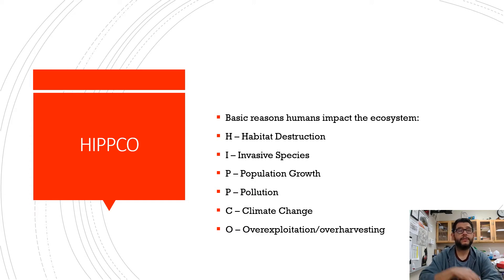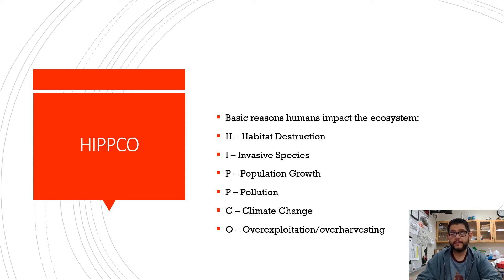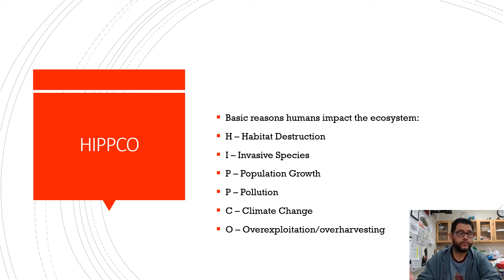Habitat destruction is clearly the removal of habitats such as trees or water. Invasive species is where you introduce something that's not supposed to be around and it ends up out-competing your native species. Population growth is where human population tends to be the overall problem — our population growth causes us to destroy more habitat or introduce invasives. And pollution can be air, land, or water, which we've gone over.